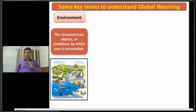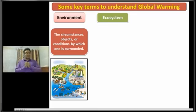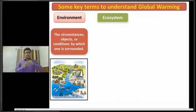Dear students, this is the picture of an environment of a place. Now I am going to discuss about another term, that is ecosystem. Basically, ecosystem is a large community of living organisms in a particular area.